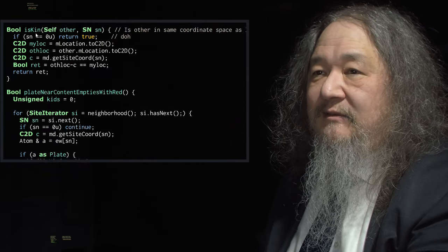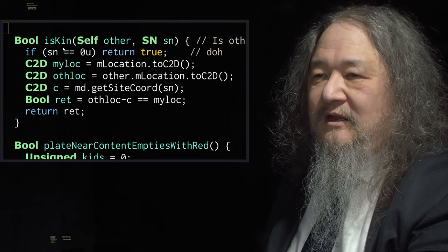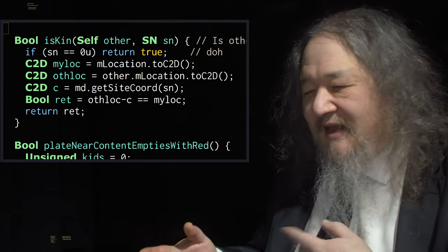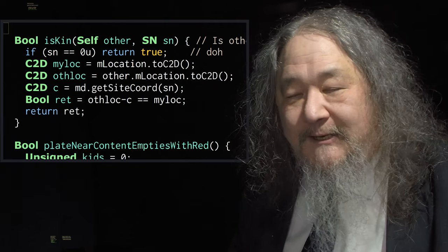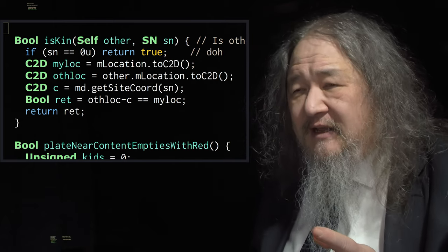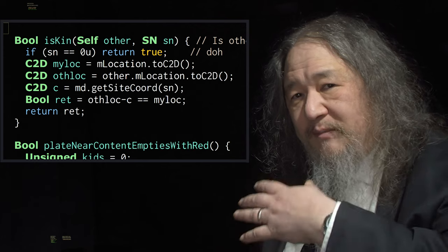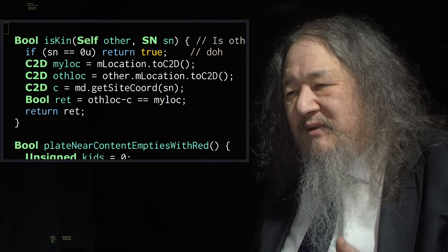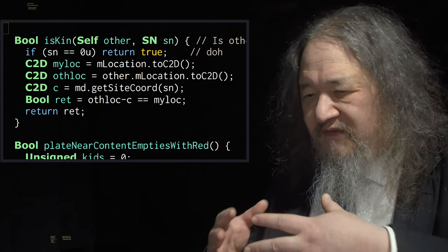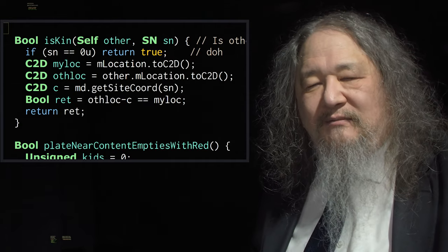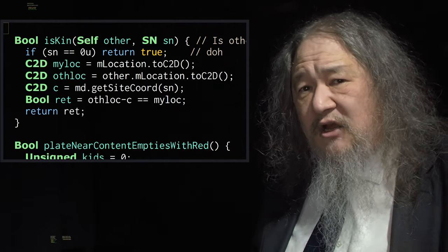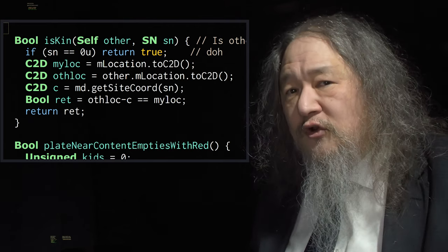So the isKin method does exactly that. It checks the coordinate of the other guy relative to me, and then subtracts where he thinks he is, minus that, and that's got to match where I think I am, and if it does, we're on the same plate. And that worked great. Don't need any tags for the plate. Now, again, in the original idea, when the reproduction was done, the plate was stripped out, but this was seeming more and more like a poor idea.